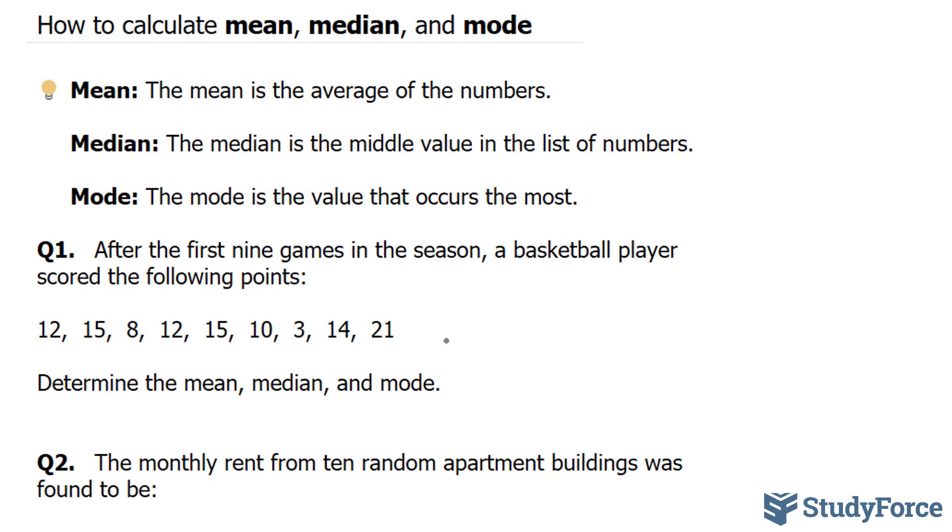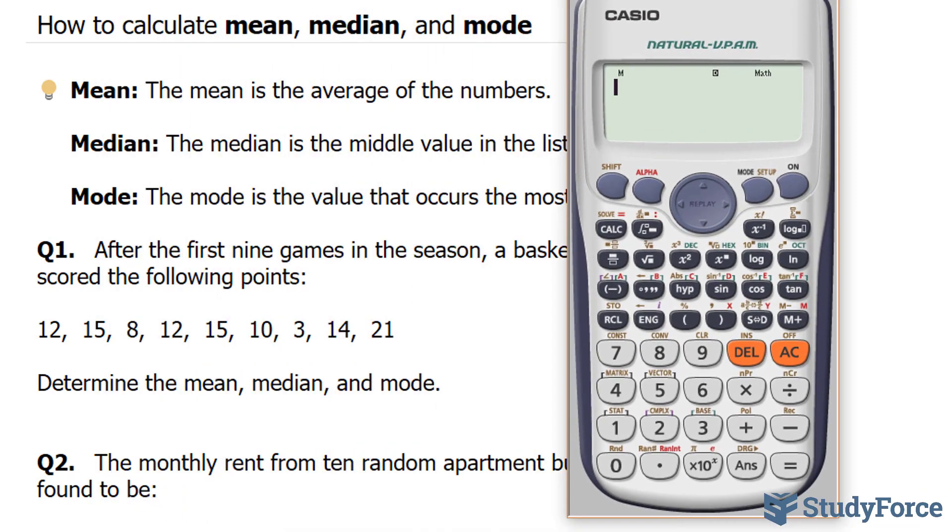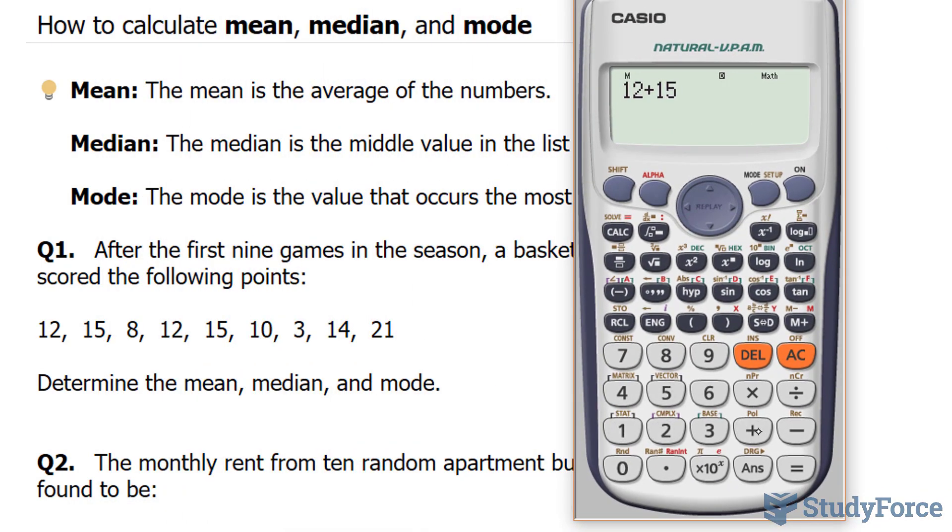Starting with the mean, what we will do is add up all of these numbers and divide it by the amount of numbers that exist, and we're told that there were nine. So using our calculator, we'll take the numbers 12 plus 15 plus 8 plus 12 plus 15 plus 10 plus 3 plus 14 plus 21.